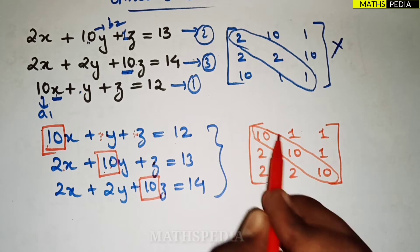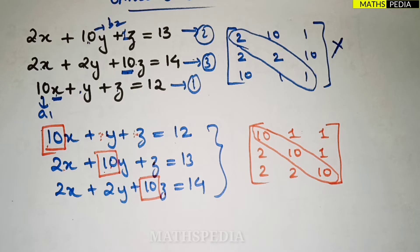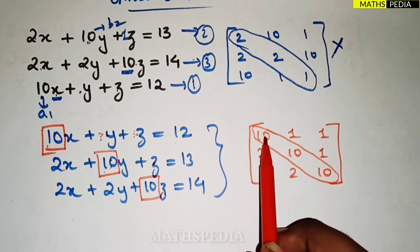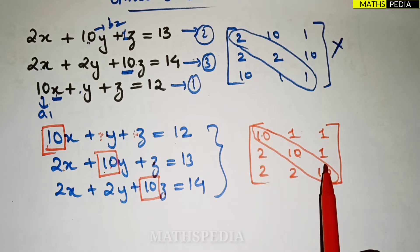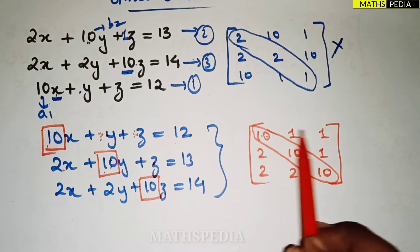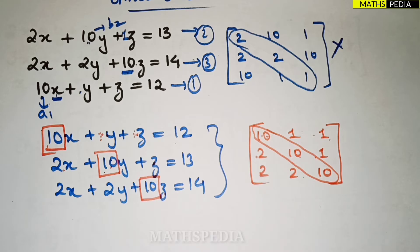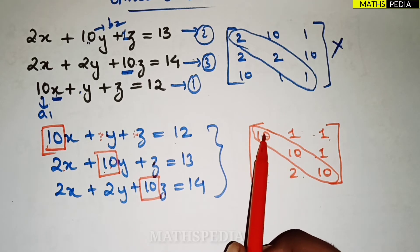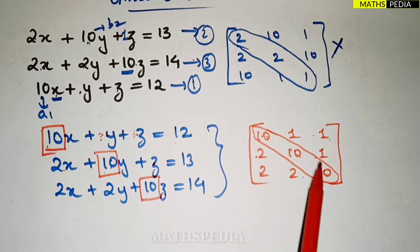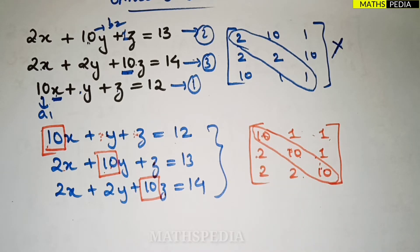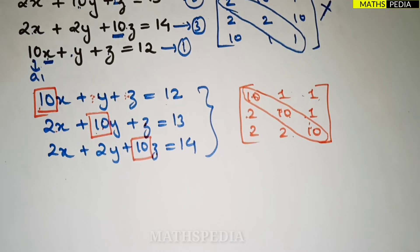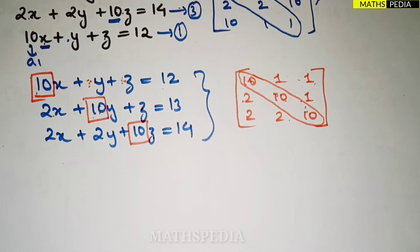If we form the matrix from these equations, it is: [10, 1, 1; 2, 10, 1; 2, 2, 10]. Observe this diagonal — the diagonal elements are dominating, meaning they are greater than the other coefficients. This is why it is called a diagonally dominant system. It is not necessary that all diagonal elements be the same number like 10, 10, 10 — they just need to be greater than the other coefficients in their respective rows.